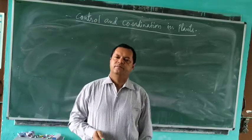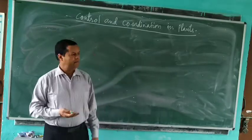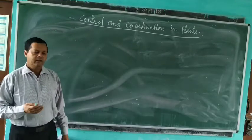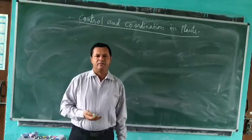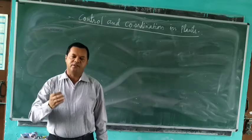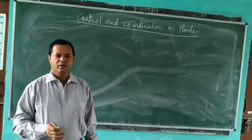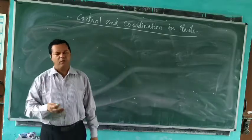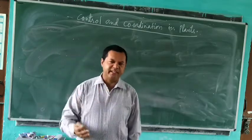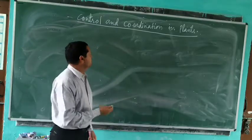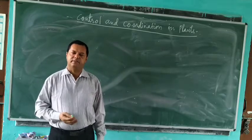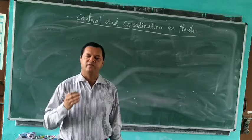In plants, there are certain chemical substances which help in the process of control and coordination. These chemical substances bring about control and coordination and are called plant hormones, phytohormones, or plant growth regulators.